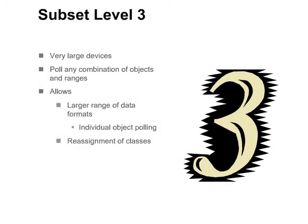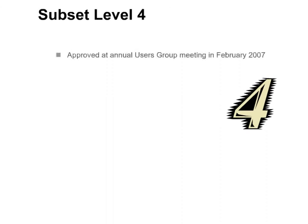Subset level 3 is designed for very large devices. In subset level 3, the master can poll for any combination of objects and ranges. It allows for a larger combination of data formats and also allows for reassignment of classes. Subset level 4 was approved at the annual users group meeting in February 2007. It adds several new features, including an XML version of the device profile document. A level 4 device must provide an XML version of the device profile document containing both the capabilities of the device and its current settings. This file may be obtained by a means other than DNP file transfer — for example, it could be generated by a PC-based configuration software and delivered via CD-ROM or USB mass storage device.